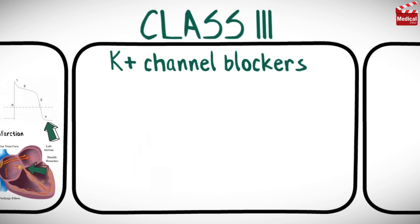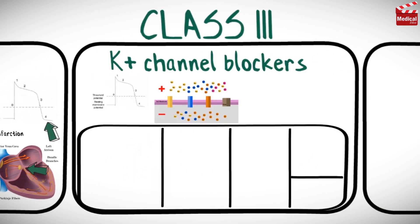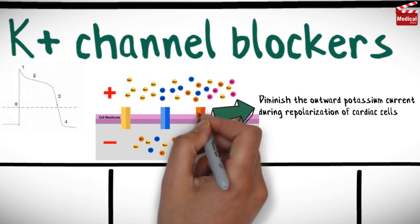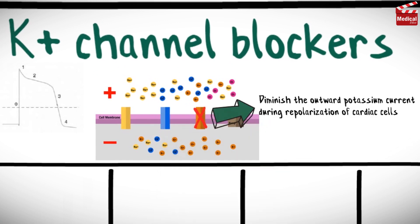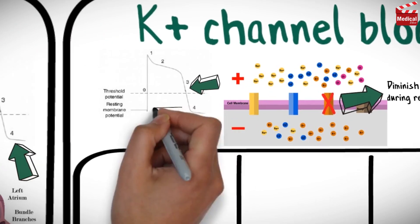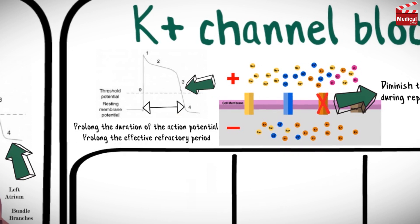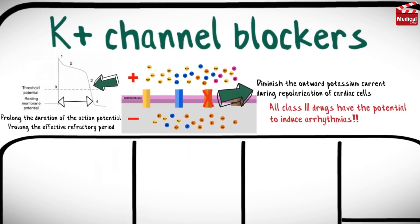Class 3 agents mainly block potassium channels, so they diminish the outward potassium current during repolarization of cardiac cells. They prolong the duration of the action potential and prolong the effective refractory period. Note that all class 3 drugs have the potential to induce arrhythmias.